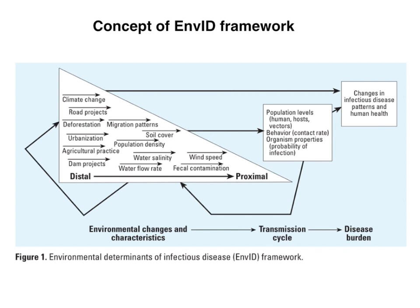By distal factors, Eisenberg basically meant things like the basic principles of climate change — for example, global warming, rise in sea levels, increased precipitation, and extreme weather events. These are not always directly observable, but their endpoints or downstream effects are observable and measurable.